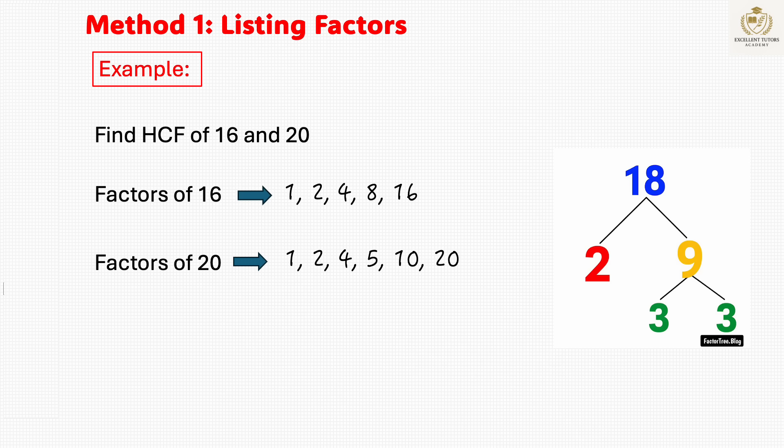For 20, the factors are 1, 2, 4, 5, 10 and 20. The largest factor common to both numbers is 4. So the HCF of 16 and 20 is 4. This method works well for smaller numbers.